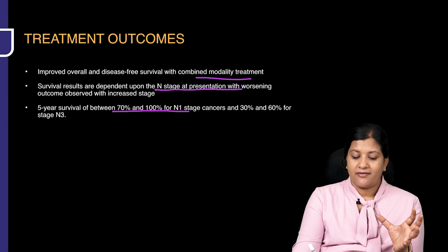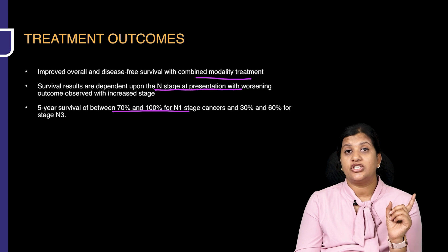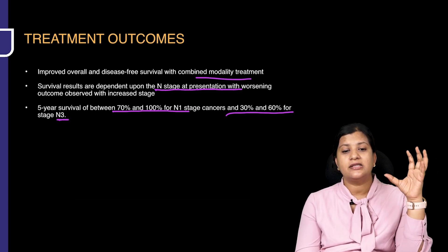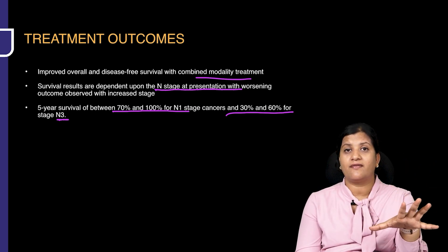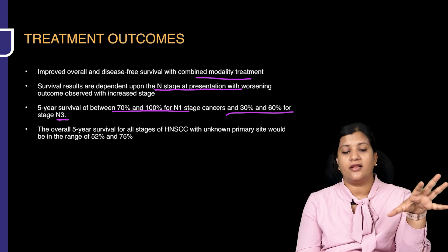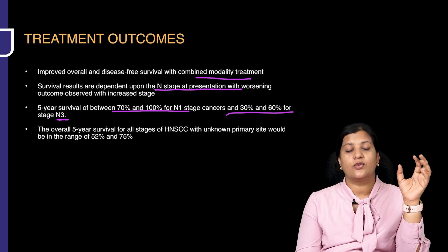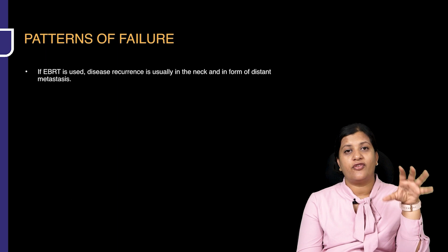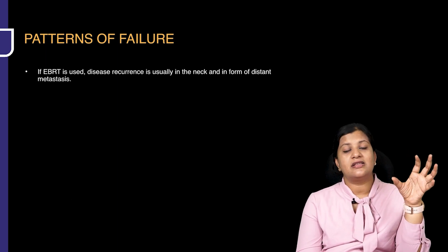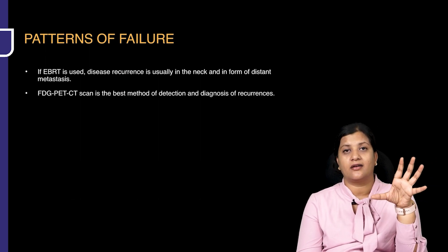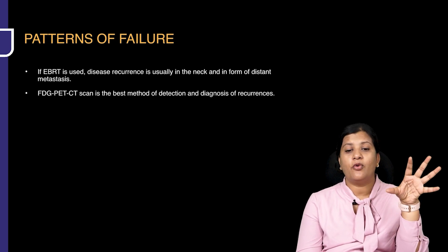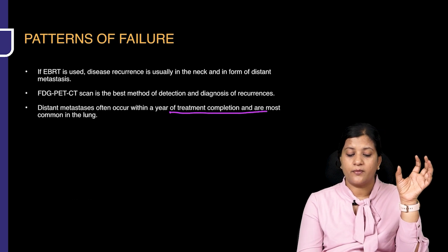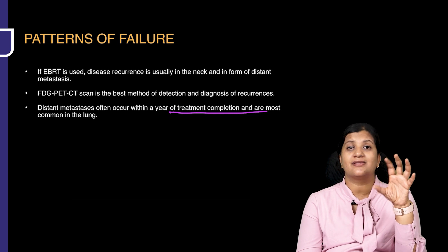The 5-year survival rate is 70% to 100% for N1 stage cancers but reduces drastically to 30% to 60% for N3 cancers. The overall survival rate for head and neck squamous cell carcinoma with unknown primary is around 52% to 75%. When external beam radiotherapy is used, disease recurrence usually occurs in the neck as distant metastasis, typically about one year after completion of therapy, with the lung being the most common distant metastatic site.